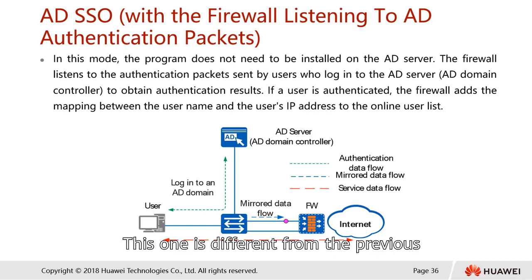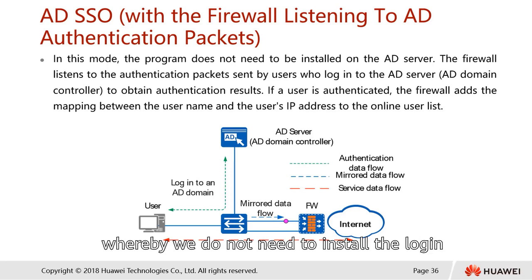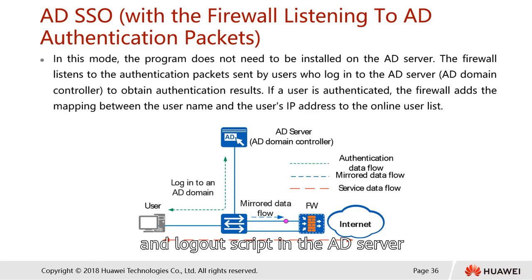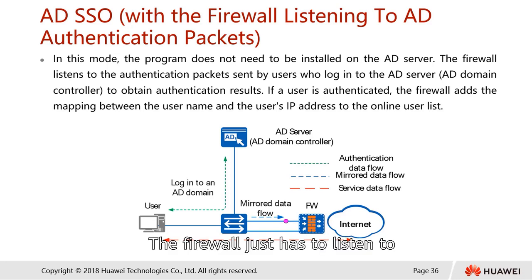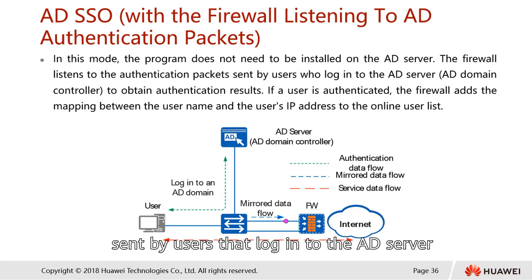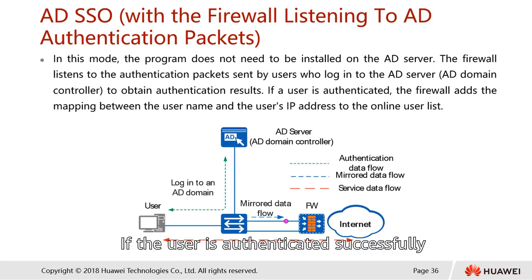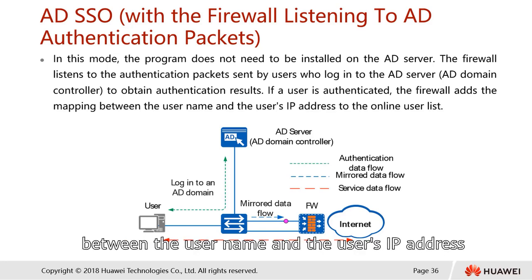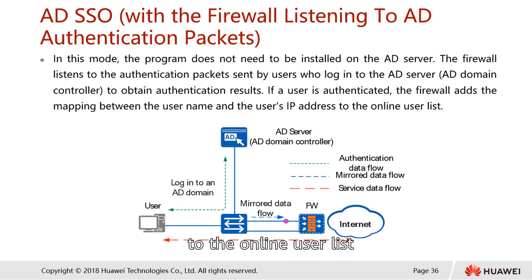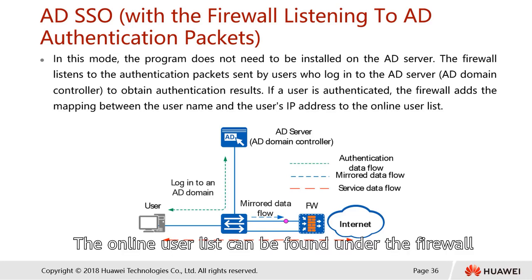In another mode, active directory single sign-on uses the firewall to listen to AD authentication packets. This mode is different from the previous ones — there is no need to install a login and logout script on the AD server. The firewall simply listens to the authentication packet sent by users logging into the AD server. If authentication is successful, the firewall maps the username and IP address to the online user list.